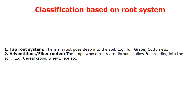Classification based on root system is of two kinds: tap root system and fibrous root system. Tap roots go very deep into the soil, as in Tur, Grape, and Cotton; pulses also come under the tap root system. Fibrous roots are found in cereals such as Wheat, Rice, etc.